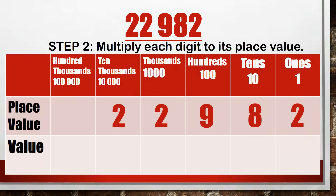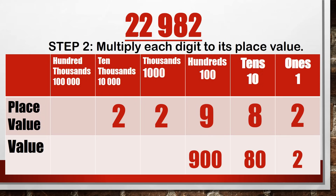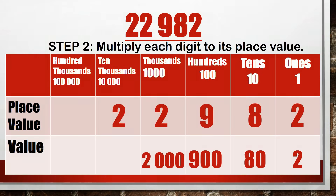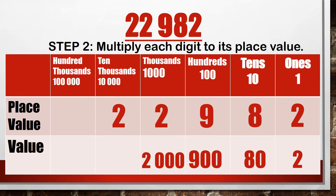The value of the ones digit is 2. 8 times 10 is 80 — the value of the tens digit is 80. 9 times 100 is 900 — the value of the hundreds digit is 900. 2 times 1,000 is 2,000 — the value of the thousands digit is 2,000. 2 times 10,000 is 20,000 — the value of the ten-thousands digit is 20,000.